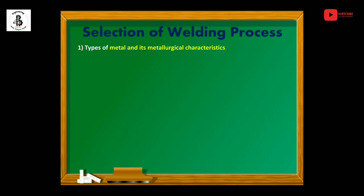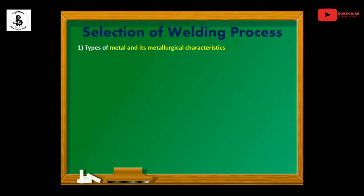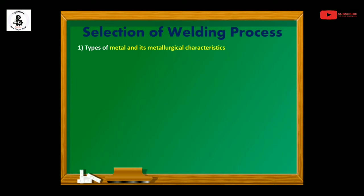The first factor is types of metal and its metallurgical characteristics. Welding is basically a metallurgical bonding between the base metal and weld metal. In the case of the fusion welding process, there will be the formation of a weld pool, and through solidification there will be metallurgical bonding between base metal and weld metal, whether it is a similar or dissimilar kind of joint. You need to consider the metallurgical characteristics of both metals as well as the filler material.